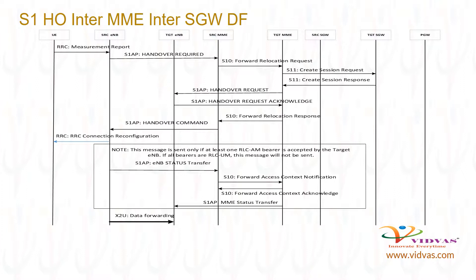Source ENB sends S1-AP Handover Required message to MME. As target ENB is managed by a different MME, source MME sends S10 Forward Relocation Request to target MME. As the tracking area of target ENB is managed by a different SGW, target MME sends S11 Create Session Request to target SGW to set up PDN context.